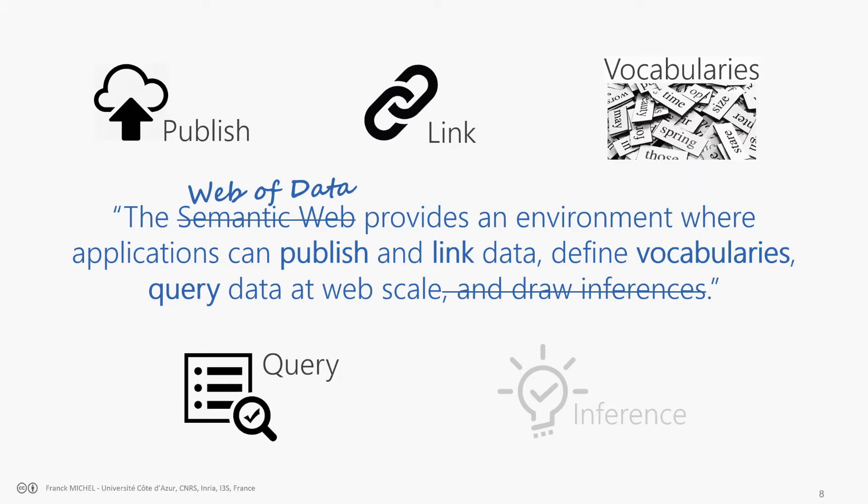If we get back to the semantic web definition, you can amend it to get the definition of the web of data: applications can publish and link data, define vocabularies, and query data at web scale. The main difference from the semantic web is the inference part. There is a lot of work on how to represent logics and reason on logics in the semantic web. You can think of the web of data as the semantic web minus inference.